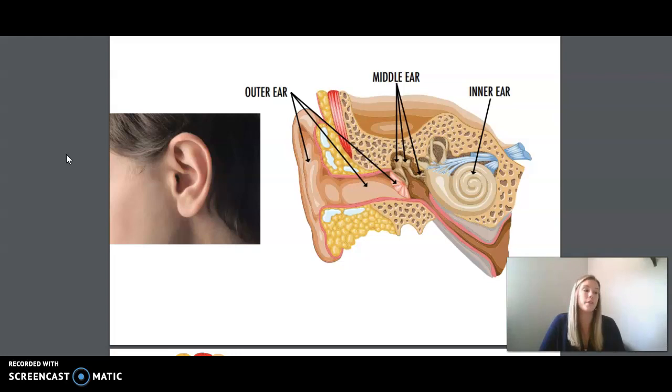Your ear is divided into three sections: the outer ear, middle ear, and inner ear. Just like your eyes, only parts of your ears is visible. The other parts are hidden inside the protective bones of your skull.